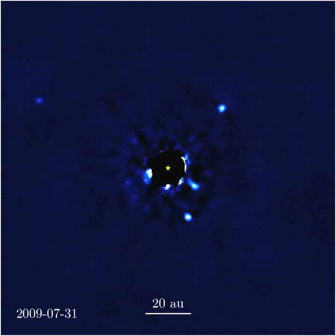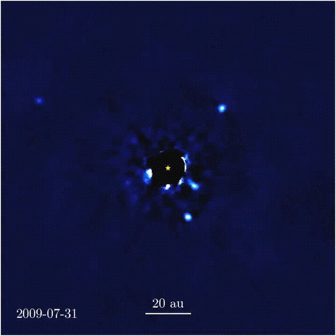The least massive planet is Fomalhaut B, which has a mass of 2 MJ or less. The coldest and oldest is 59 VB, with a mean temperature of 240 degrees Celsius and an age of 100 to 500 million years. This list also includes the four members of the multi-planet system that orbit HR 8799.